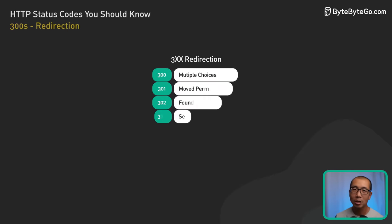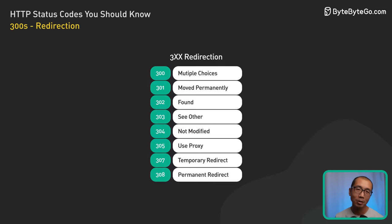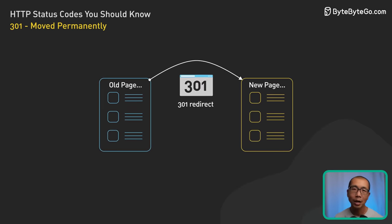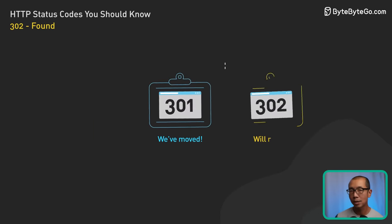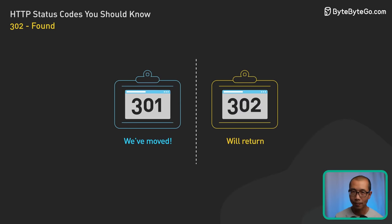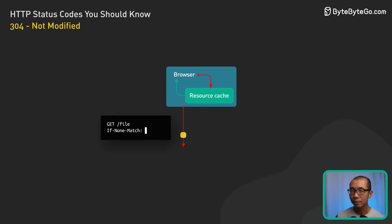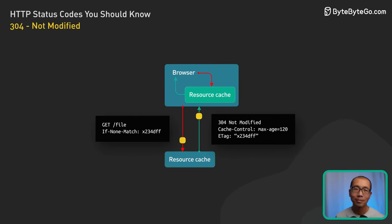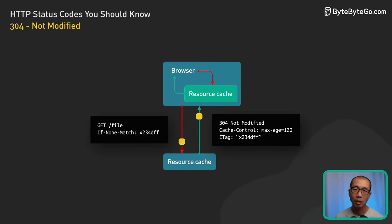The 300s are redirection codes — the web's helpful traffic controllers. 301 Moved Permanently is a forwarding address, with the Location header pointing to the new permanent URL. 302 Found is temporary — it points to a new location, but the original URL still works. 304 Not Modified is a cool efficiency play: the browser asks has this changed since I cached it, and 304 says nope, you're good. This saves bandwidth and time by avoiding unnecessary redownloads.